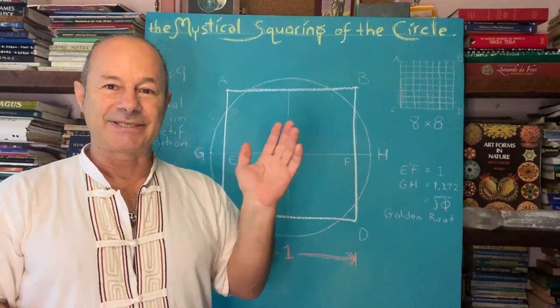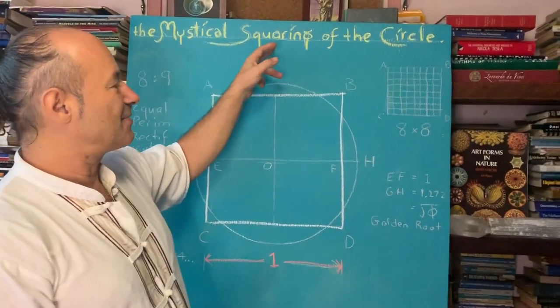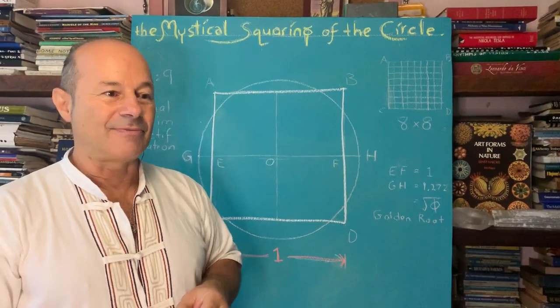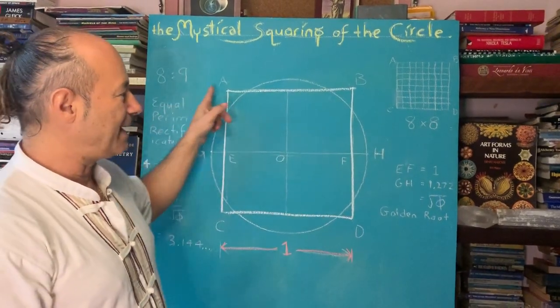And that's got another name as distinguished from the squaring of the circle. We're calling it the rectification of the circle. So when we say rectification, we're talking about making equal perimeters.